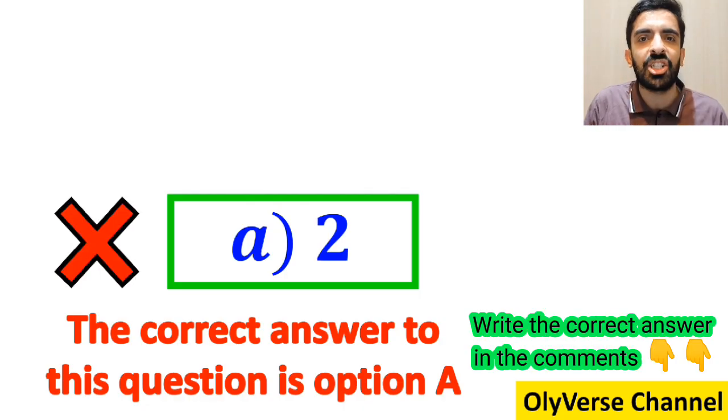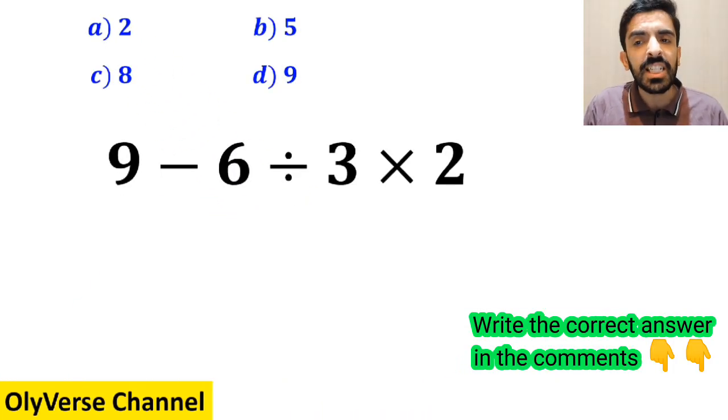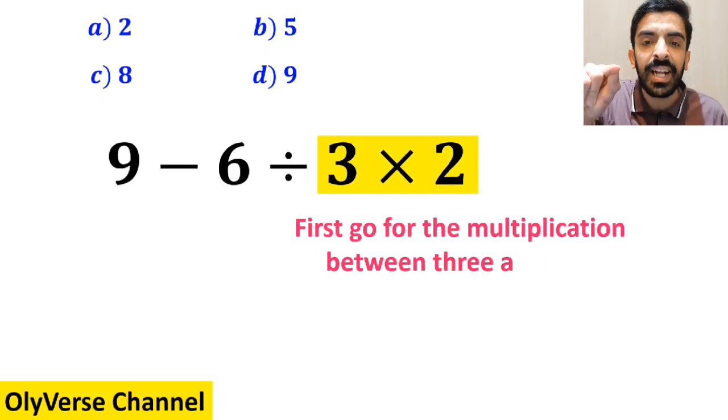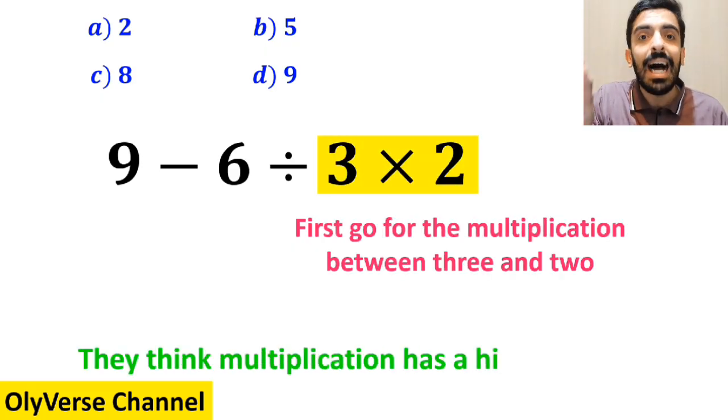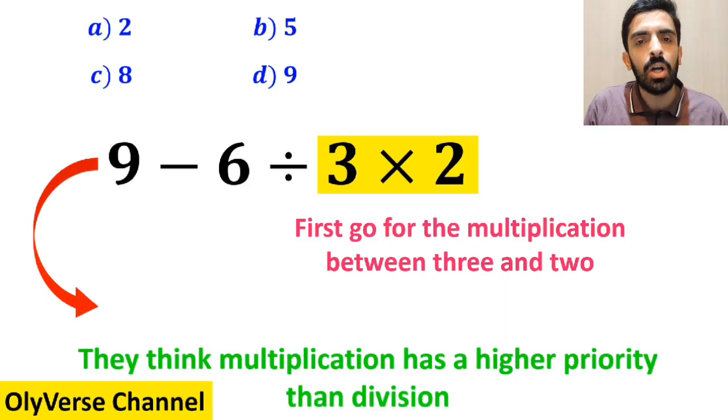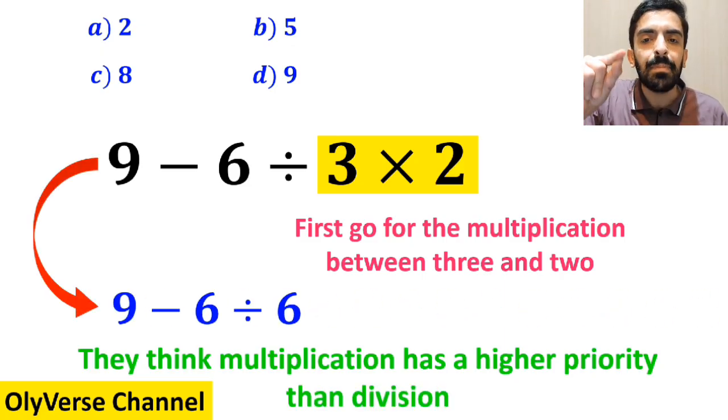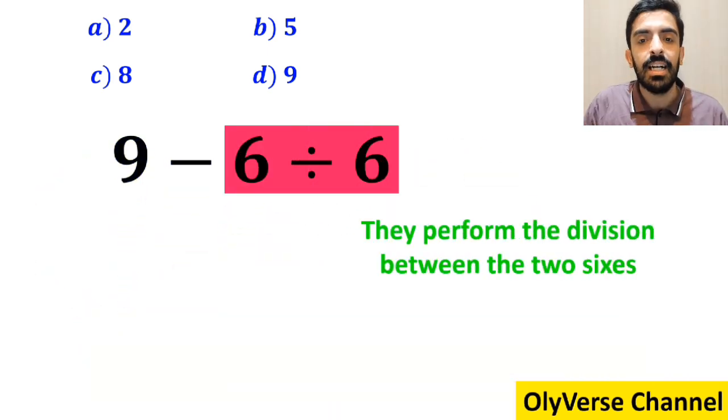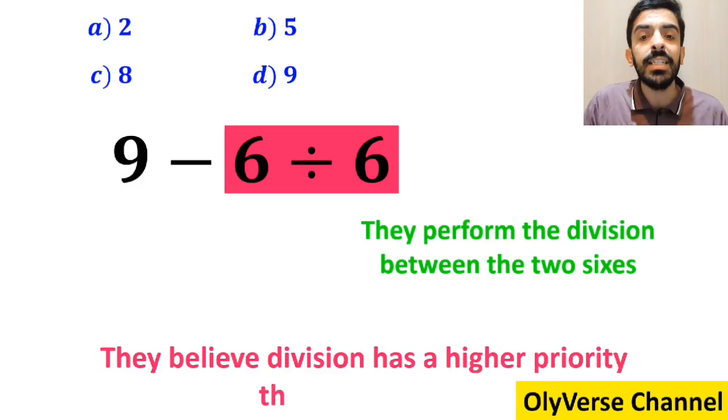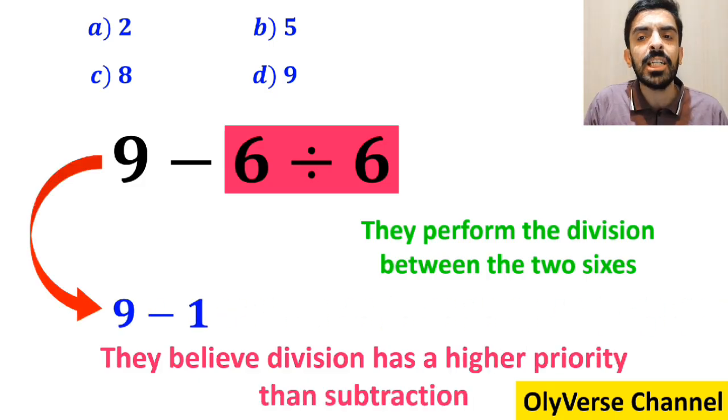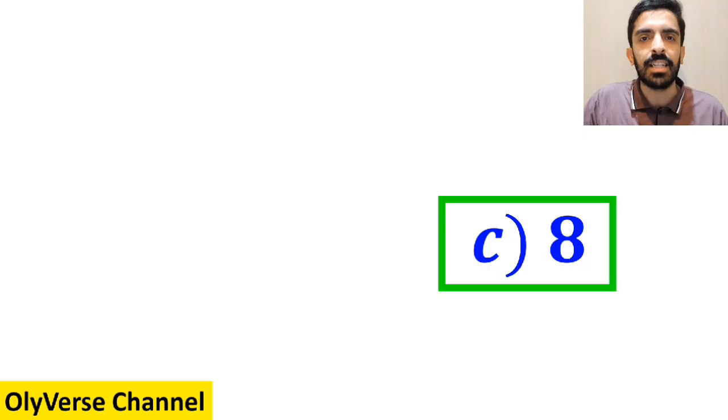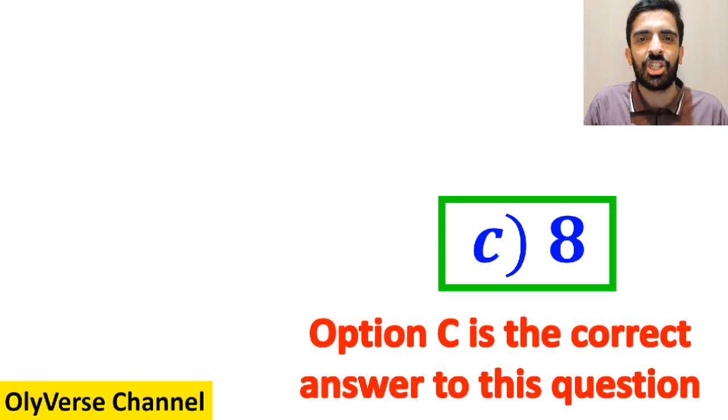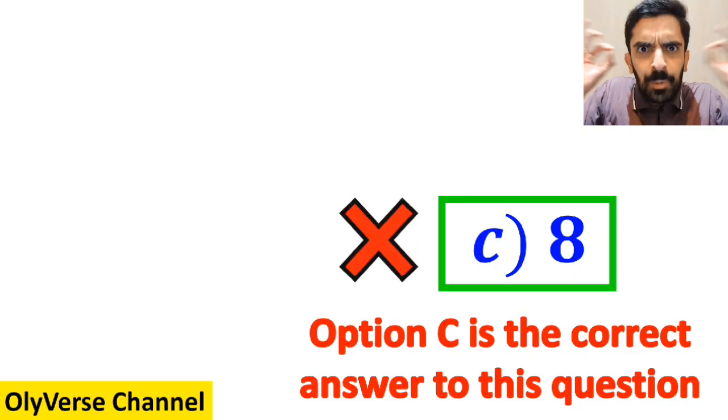Also, some other people to solve this question first go for the multiplication between 3 and 2 because they think multiplication has a higher priority than division. So they write this expression as 9 minus 6 divided by 6. In the next step, they perform the division between the two sixes since they believe division has a higher priority than subtraction, and they simplify this expression to 9 minus 1, which finally gives them the answer 8. Then without any hesitation, they quickly say that option c is the correct answer to this question. But this answer is absolutely wrong.